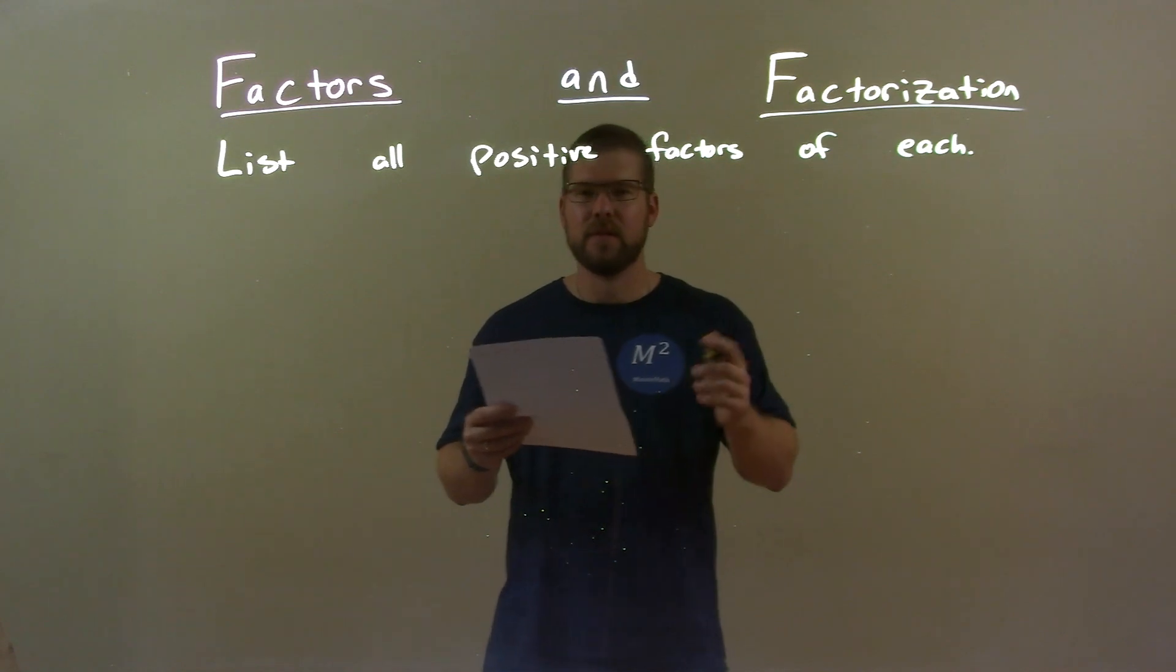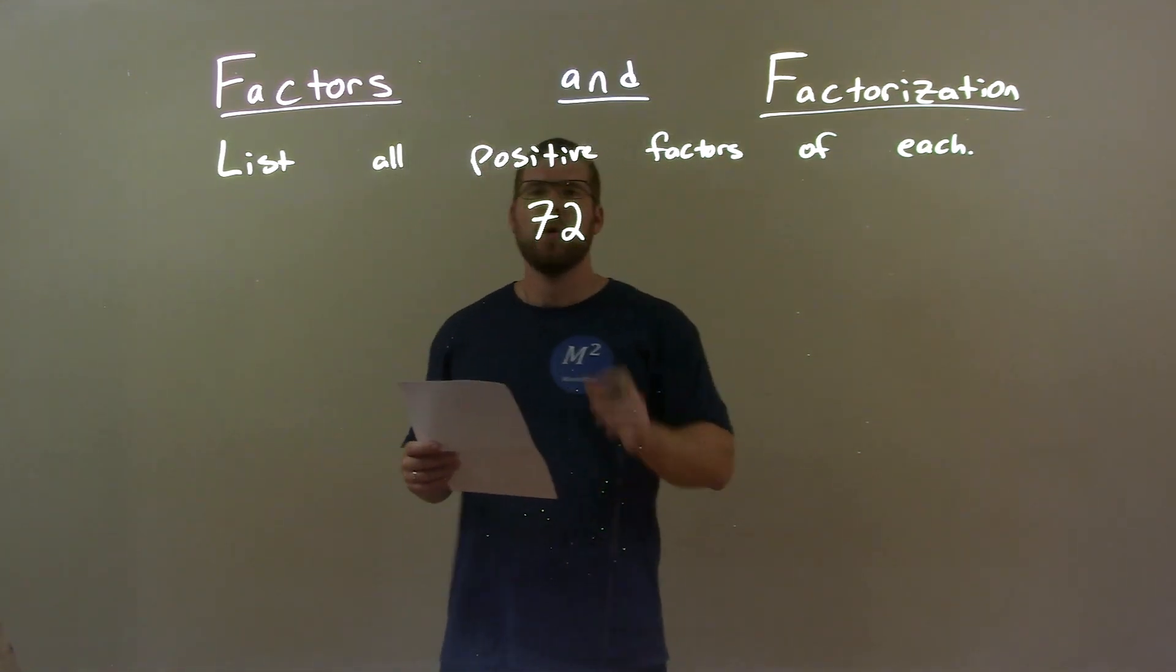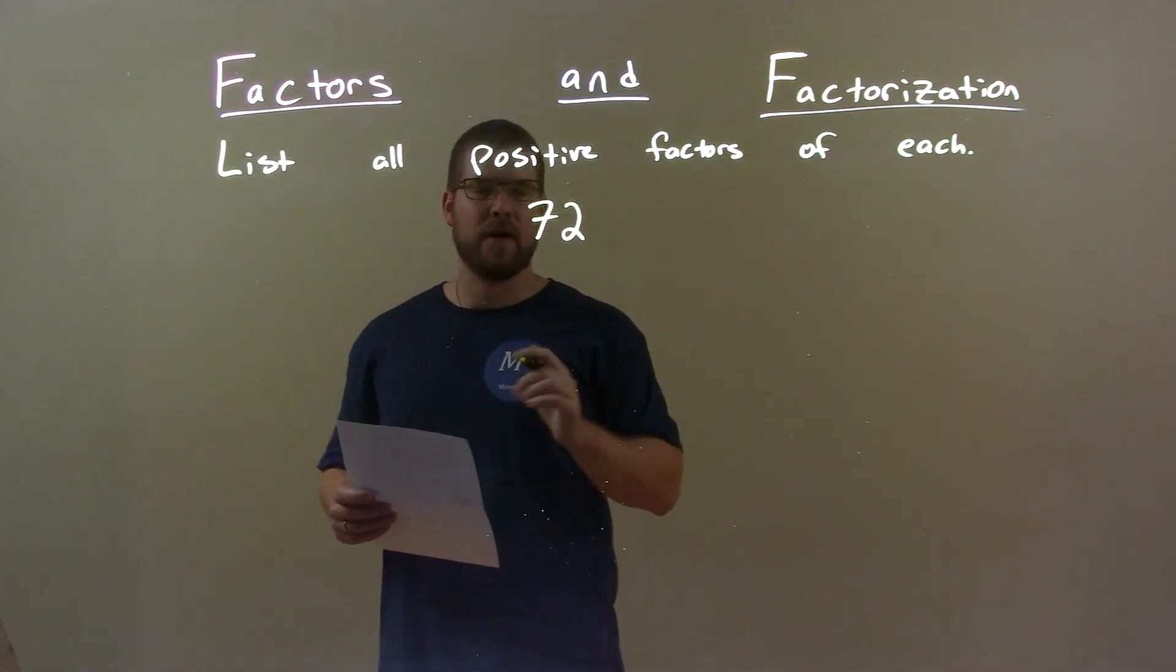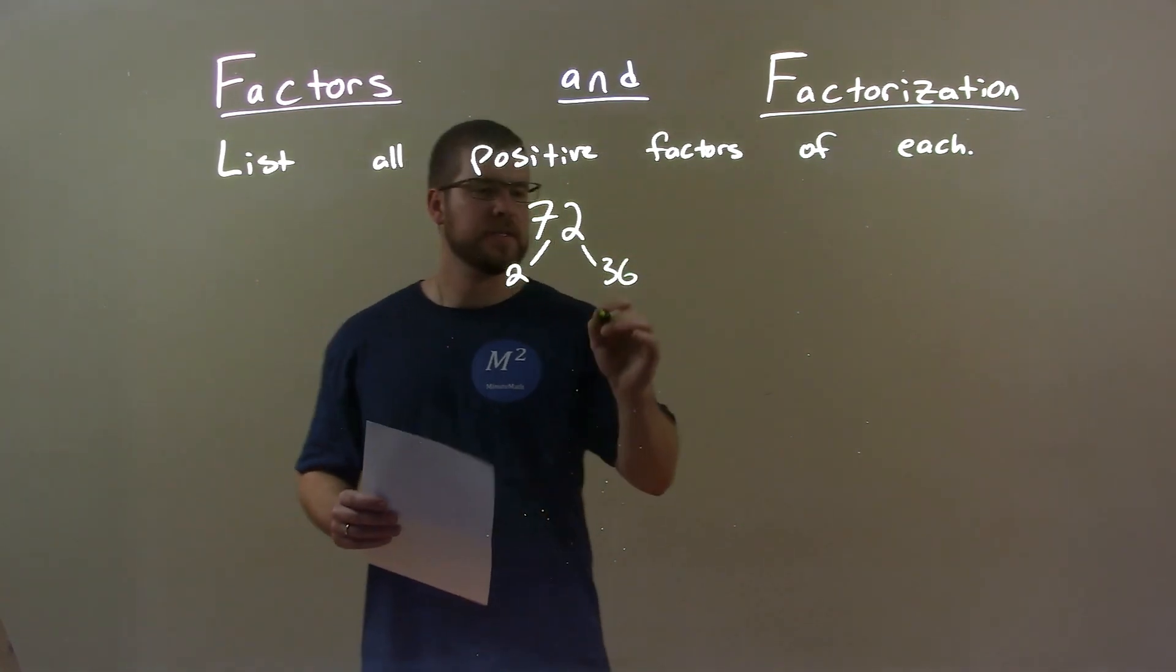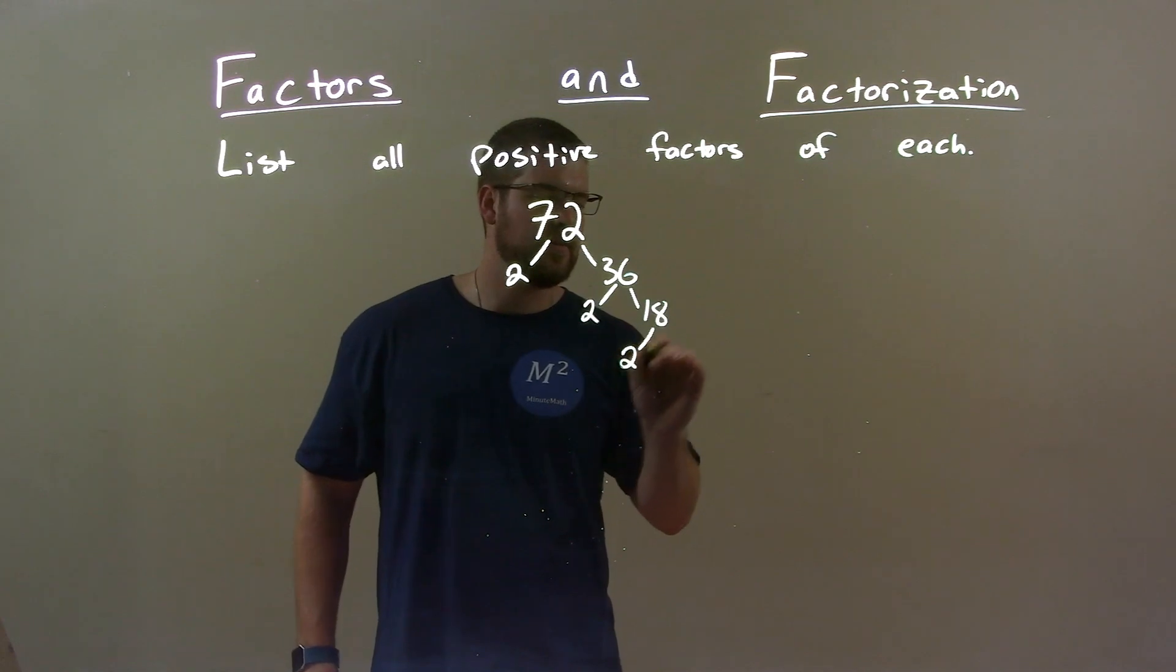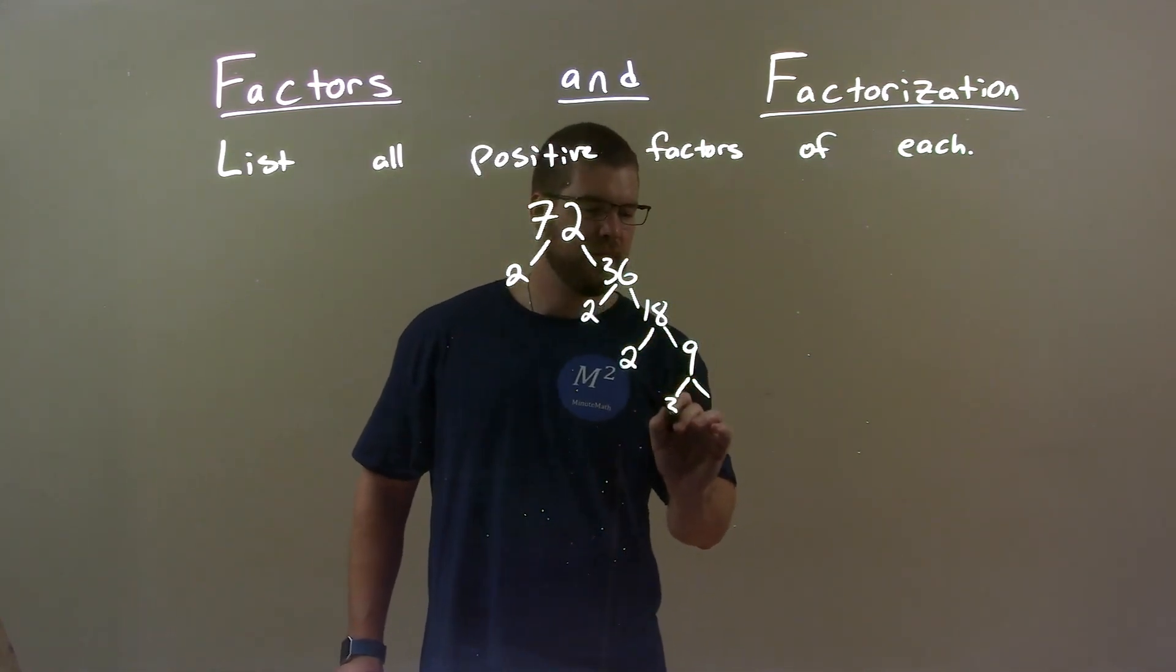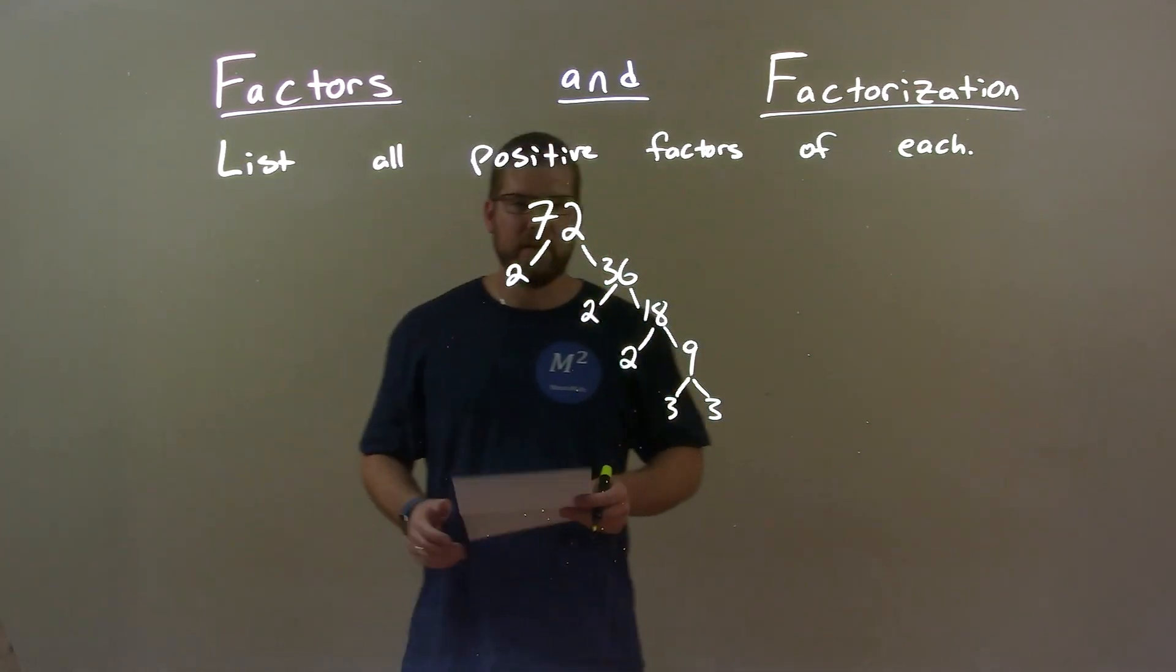If I was given this number, 72, I'm going to break it down using my prime factorization. 2 and 36. 36 is 2 and 18. 18 is 2 and 9, and 9 is 3 and 3. So we can break it down quite far here.